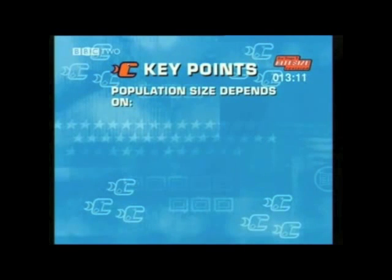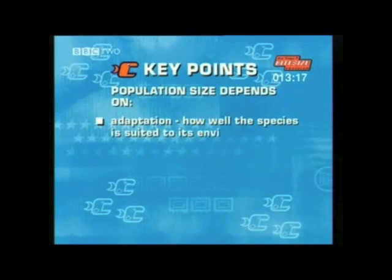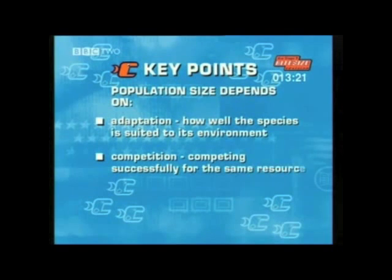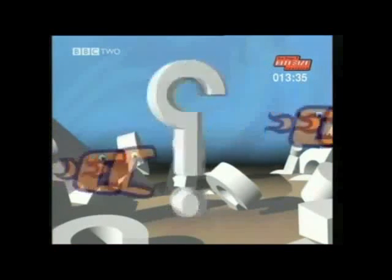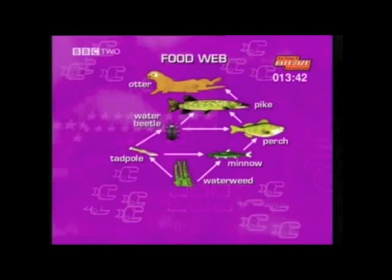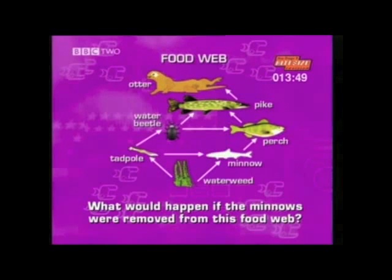The population size of any species is controlled by three main factors: adaptation — how well the species is suited to its environment; competition — how successful the species is competing with others for food, water, or shelter; and predation — how predators affect the size of the population. Remember the food web in a typical British river — what would happen if the minnows were removed? Three things will happen, so three marks have been awarded. Why not pause and have a think about it?